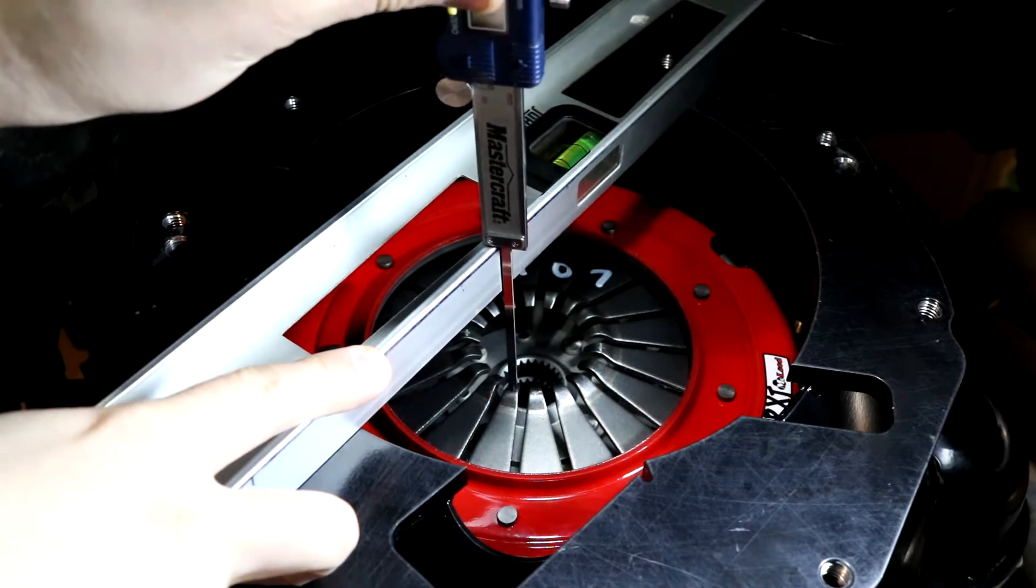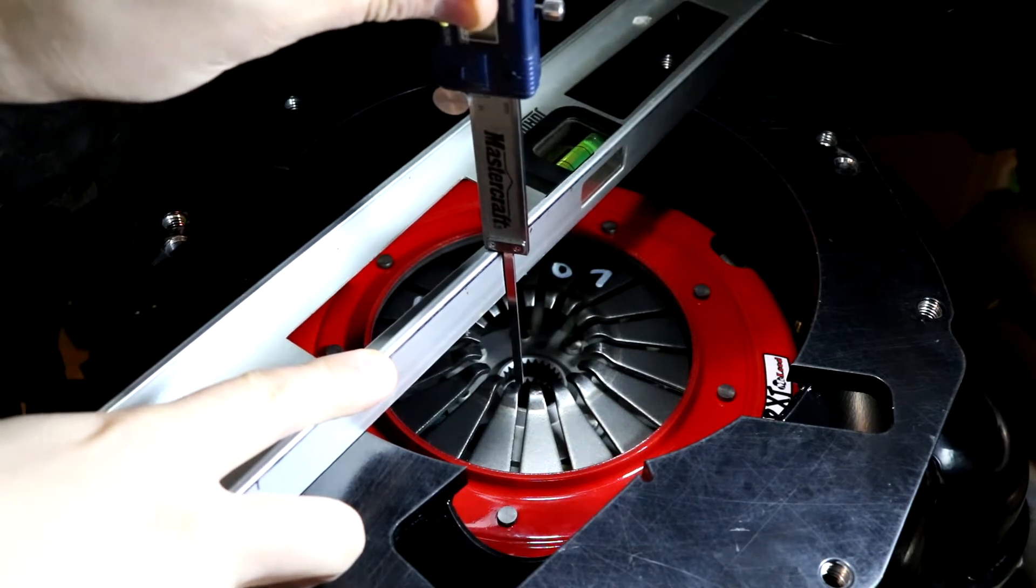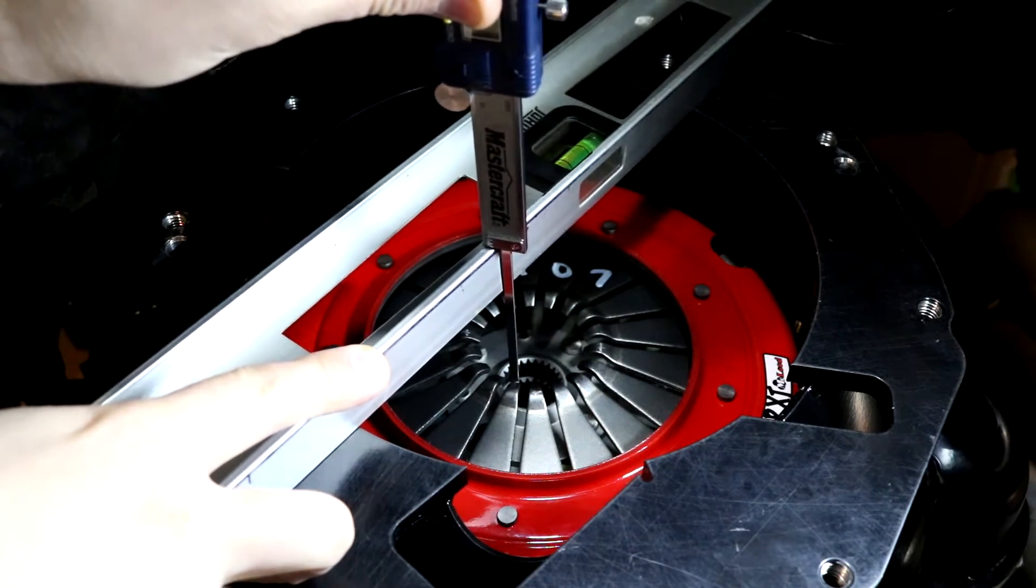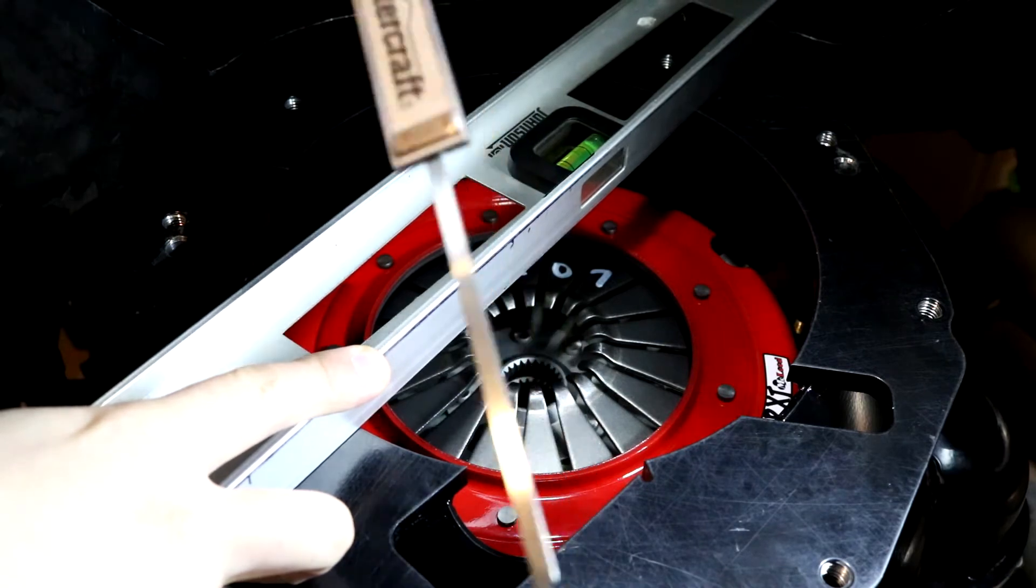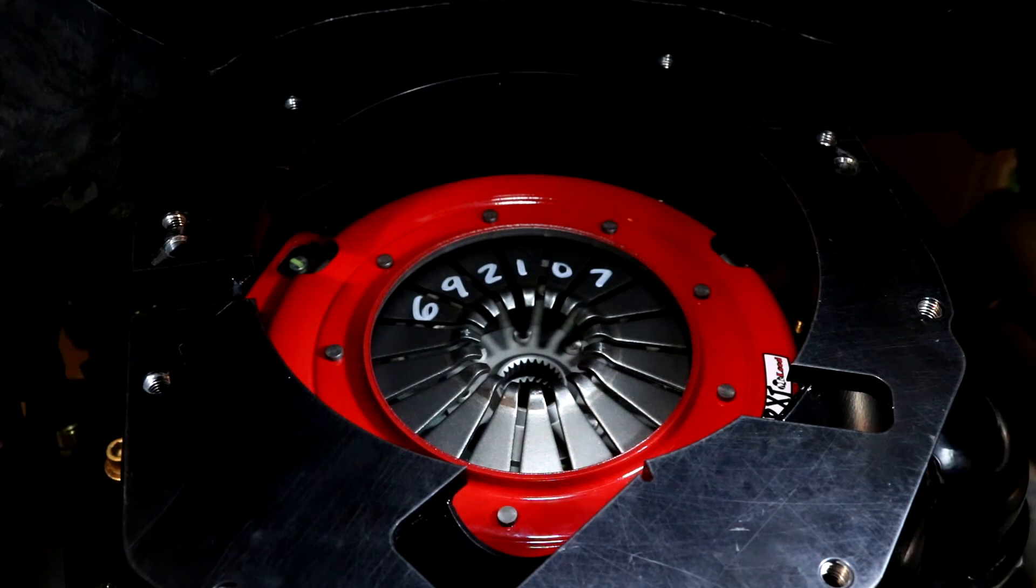We'll get our caliper and we just bring it down until we're touching the tip of that like so, get it over there like that. And it looks like we're at 3.432. So we subtract our air gap which is an eighth of an inch, 0.125, and we're looking at 3.307 for an installation height.